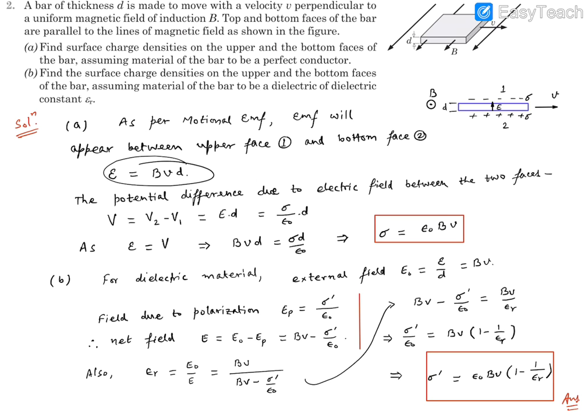The EMF across these two faces is Bvd. Now we can find the surface charge densities because this potential difference can also be calculated using the electric field from these charges. The potential difference is V = Ed, where we can think of these as two parallel charged plates behaving like a parallel plate capacitor. The electric field E between these two layers of charges is given by σ/ε₀, so V = (σ/ε₀)d.